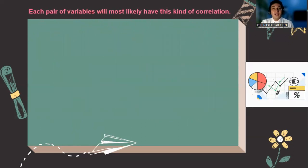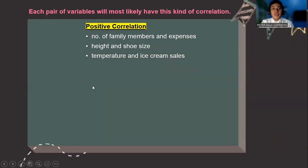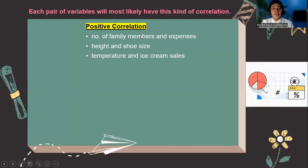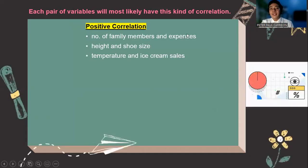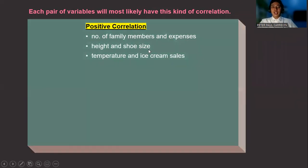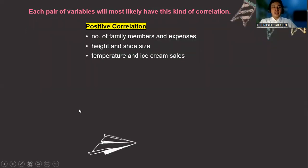Another way of describing it is through these particular examples. Look at the examples of positive correlation. Number of family members and expenses. The more family members, the higher the expenses. And the fewer family members you have, then the lower the expenses. Your height and shoe size. Temperature and ice cream sales. We all know that if it's very hot, then ice cream sales get higher.